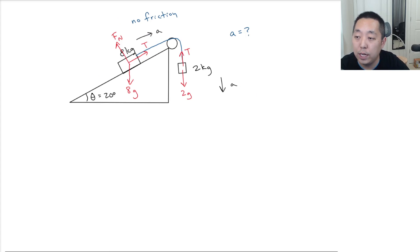So once we do that, we now need to decompose this gravitational force. This is 20 degrees—it matches the incline. And then this component of the force is 8g sine 20 degrees and this component of the force is 8g cosine 20 degrees.